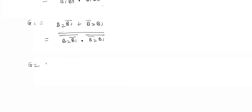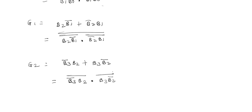Similarly, G2 I can rewrite as: B3̄·B2 + B3·B2̄. This expression I can rewrite as: (B3̄·B2)·(B3·B2̄) bar, and the whole bar. And G3 is simply B3.